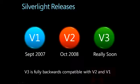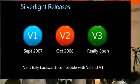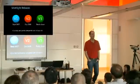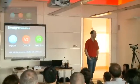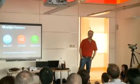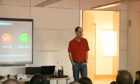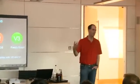Silverlight 2 was the first release that was really for programmers and for RIA applications. It included a cross-platform CLR as part of it and really started the foundations of the things you need to build applications — things like data binding, things like controls, things like layout templates. Version 3 is going to be shipping really, really soon.